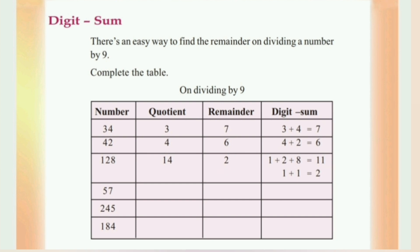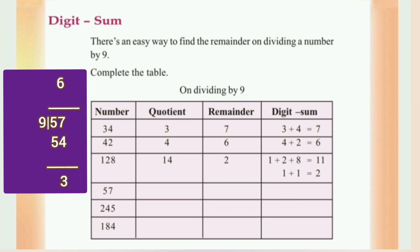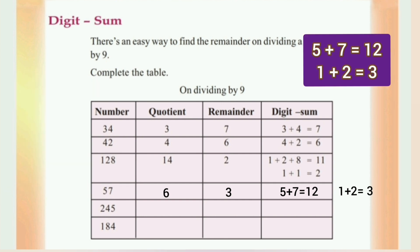The next number is 57. 57 divided by 9: 6 into 9 is 54, so the quotient is 6 and the remainder is 3. The digits in the sum: 5 plus 7 equals 12. Then 1 plus 2 equals 3. The remainder is 3 and the digits in the sum is also 3.